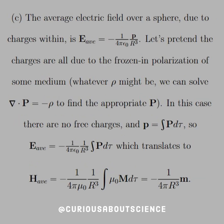Finally, for part C, the average electric field over a sphere due to charges within is equal to negative 1 over 4πε₀ times p over r³, where p is the polarization. We pretend the charges are all due to the frozen-in polarization of some medium. We know the divergence of P equals negative ρ to find the appropriate polarization. In this case there are no free charges, and p equals the volume integral of the polarization P. Plugging that in, we have an expression for the E field in terms of polarization p.